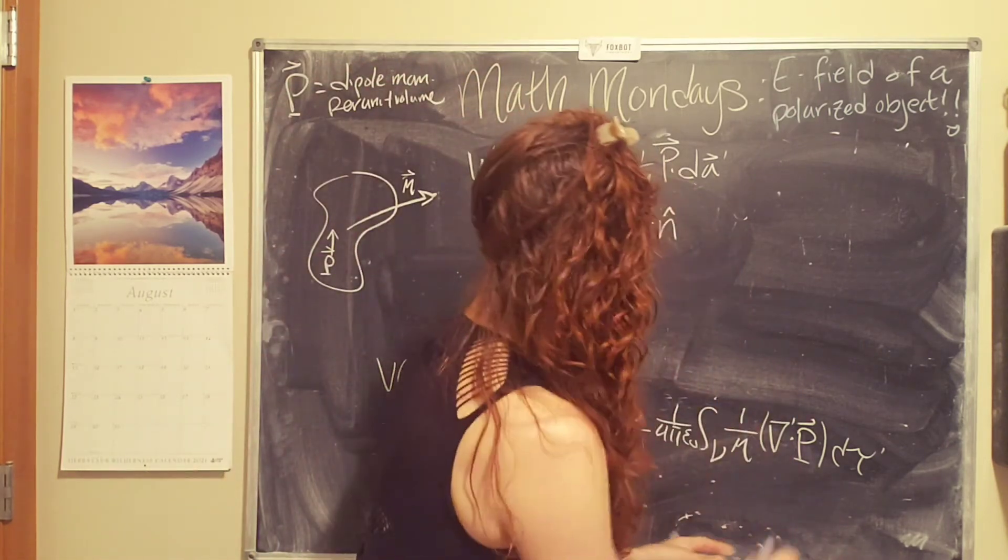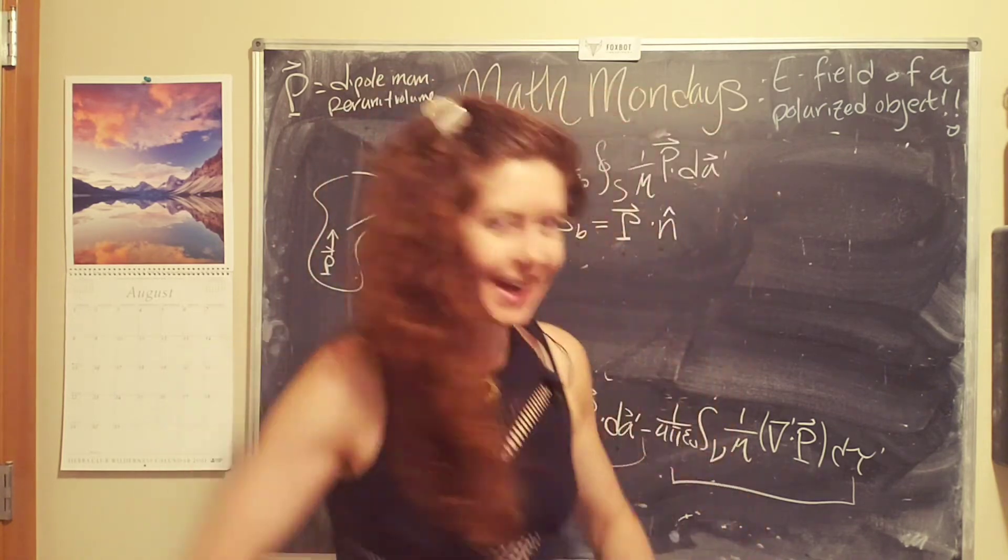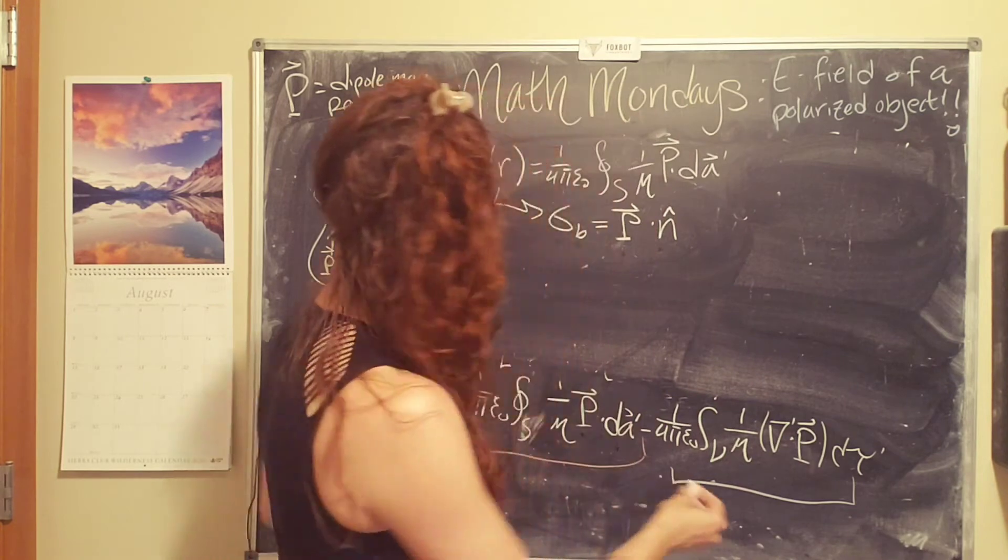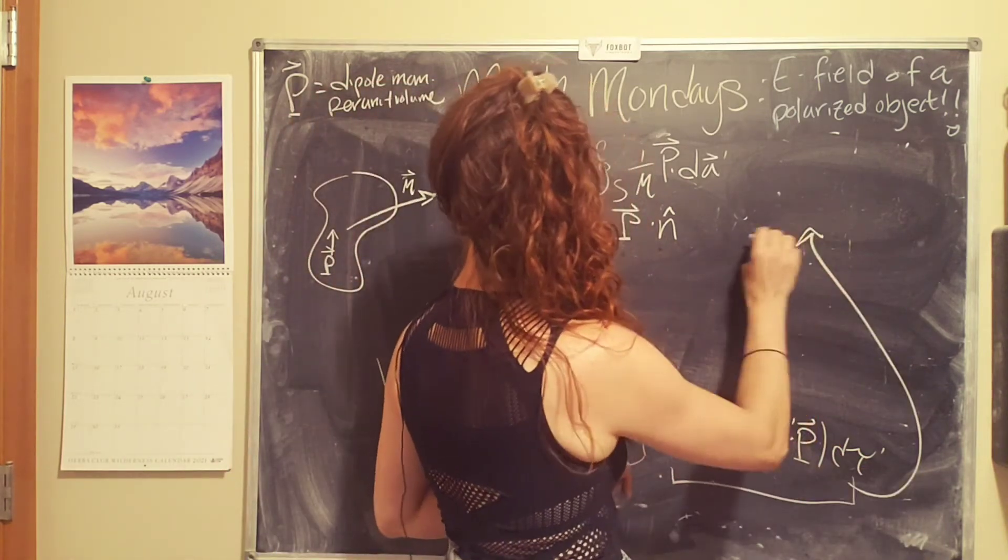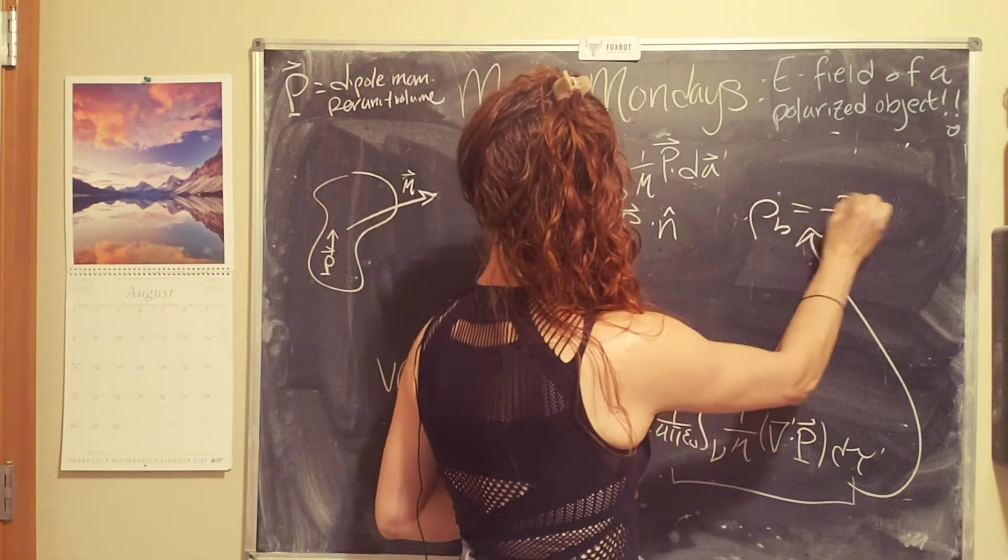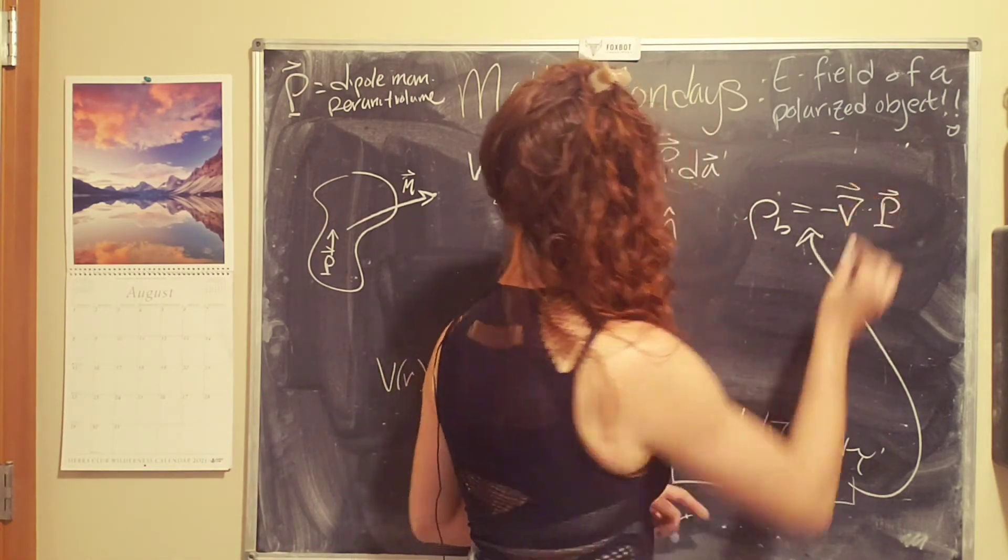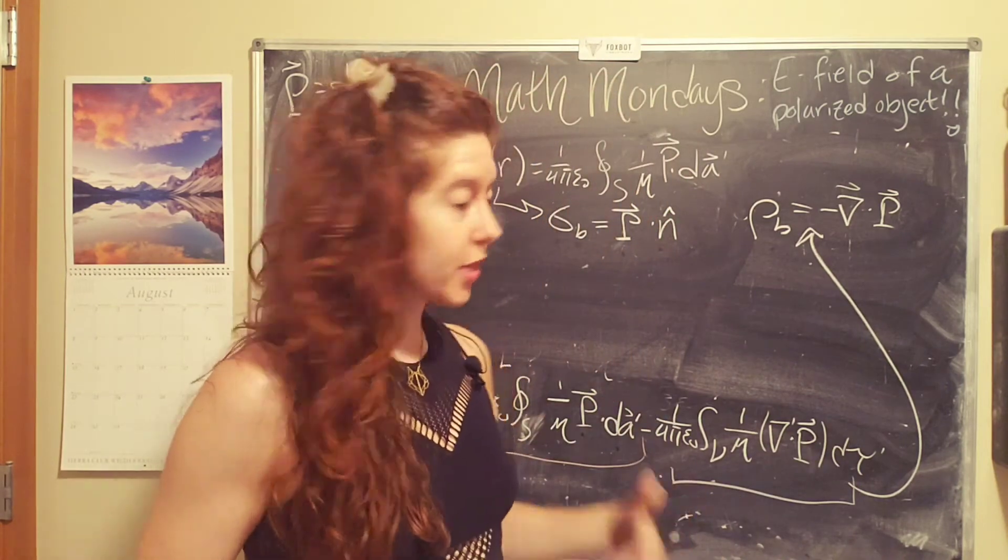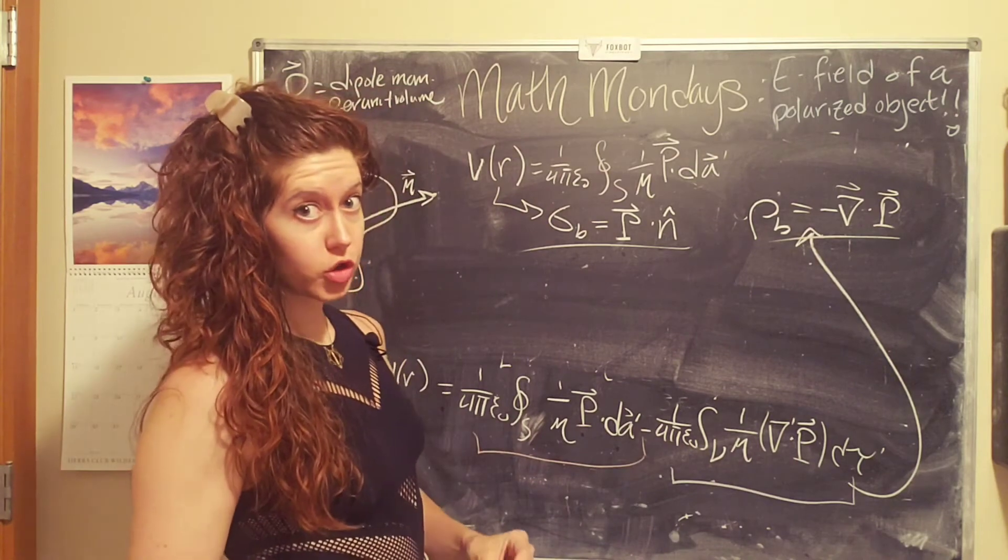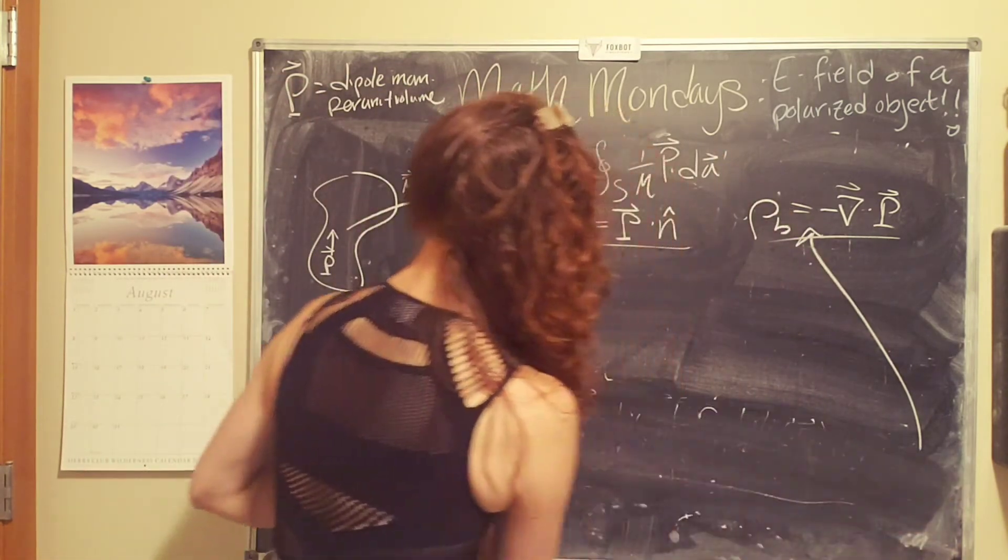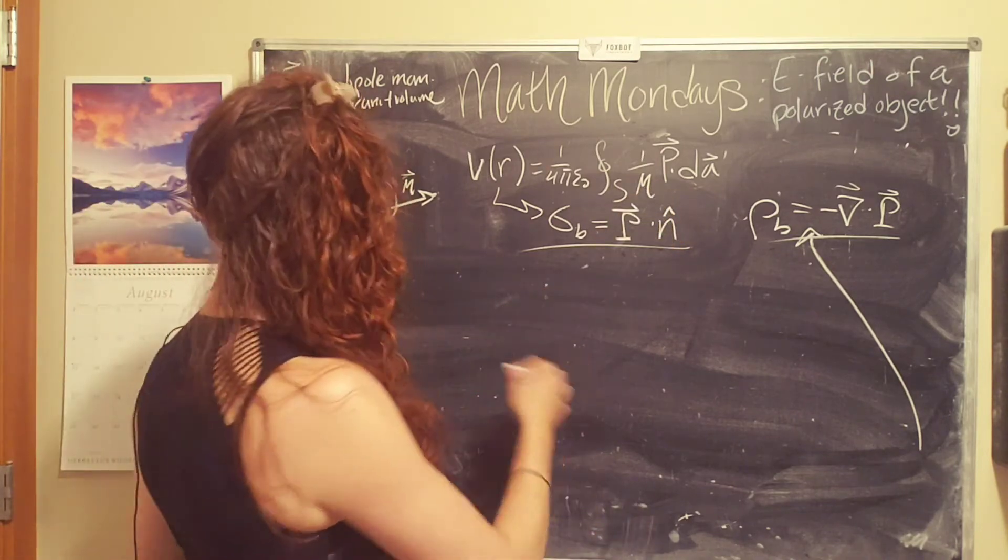And then the second term right here really looks like the potential of a volume charge. But in other words, the volume charge, second term, the volume charge of the bound charges equals negative del dot the polarization. So with these definitions, we have a surface charge due to the bound charges, and we have a volume charge due to the bound charges inside.